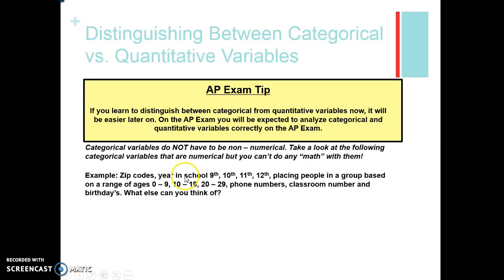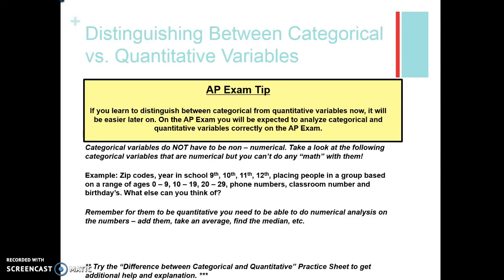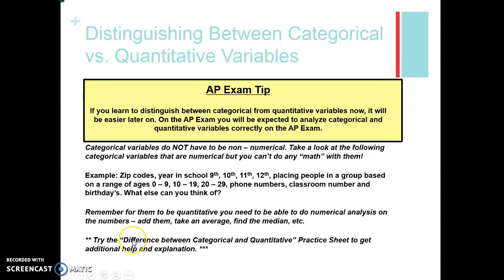Your year in school — 9th, 10th, 11th, and 12th graders — places people in a group, but you can't find the average grade; '9.5' doesn't really make sense. Similarly, if you place people in age ranges like 0 to 9, finding an average doesn't make sense because of the large range of values. Other examples of numerical-but-categorical variables include phone numbers, classroom numbers, and birthdays. For a variable to be quantitative, you have to be able to perform numerical analysis: take the average, add them, find the median, etc. There's a worksheet under this section called 'Trying the Difference Between Categorical and Quantitative Variables' if you want more practice.